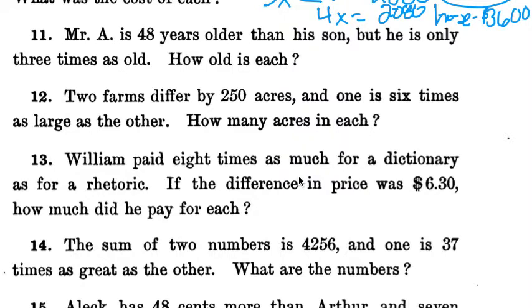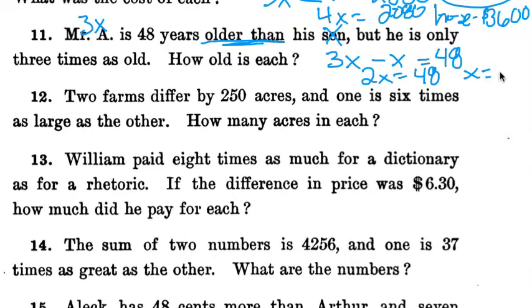Number 11: Mr. A is 48 years older than his son, but he's only three times as old. How old is each? We know the least amount about the son, so we'll make that the variable. Mr. A is three times as old. Older than is our keyword for subtraction. So the total age of Mr. A, take away the age of his son, leaves us with the 48 years older that he is. 3x minus x is 2x. Divide them both by 2, and x equals 24.